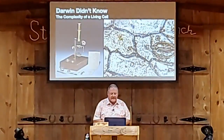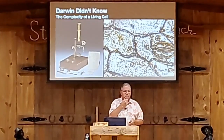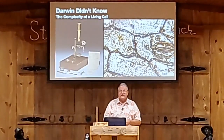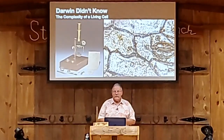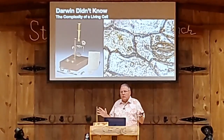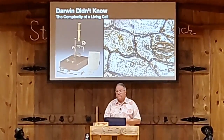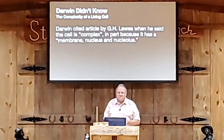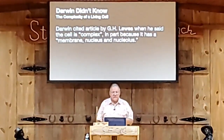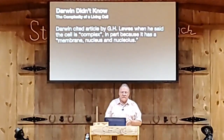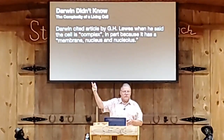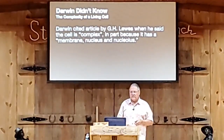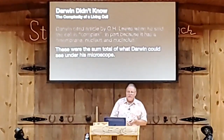Let's start with what Darwin saw. On the left you see a picture of one of his 15 or so microscopes — a pretty primitive device by today's standards. On the right you see probably a better picture than what he actually saw through that instrument — plant cells. Darwin cited an article by G.H. Lewes at the time, saying that the cell is complex because it has a membrane, a nucleus, and a nucleolus. That's the complexity Darwin saw — three things. That was the sum total.